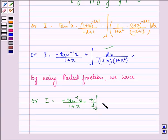1 by 2 integral dx upon 1 plus x that means a was found out by using partial fraction as 1 by 2 and therefore it is 1 by 2 integral 1 minus x upon 1 plus x square dx.